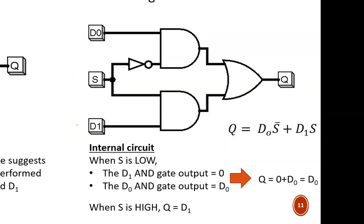That whole discussion was assuming S equals 0. All of the arguments hold true when S equals 1, but then we would be selecting line 1, and Q would equal D1.